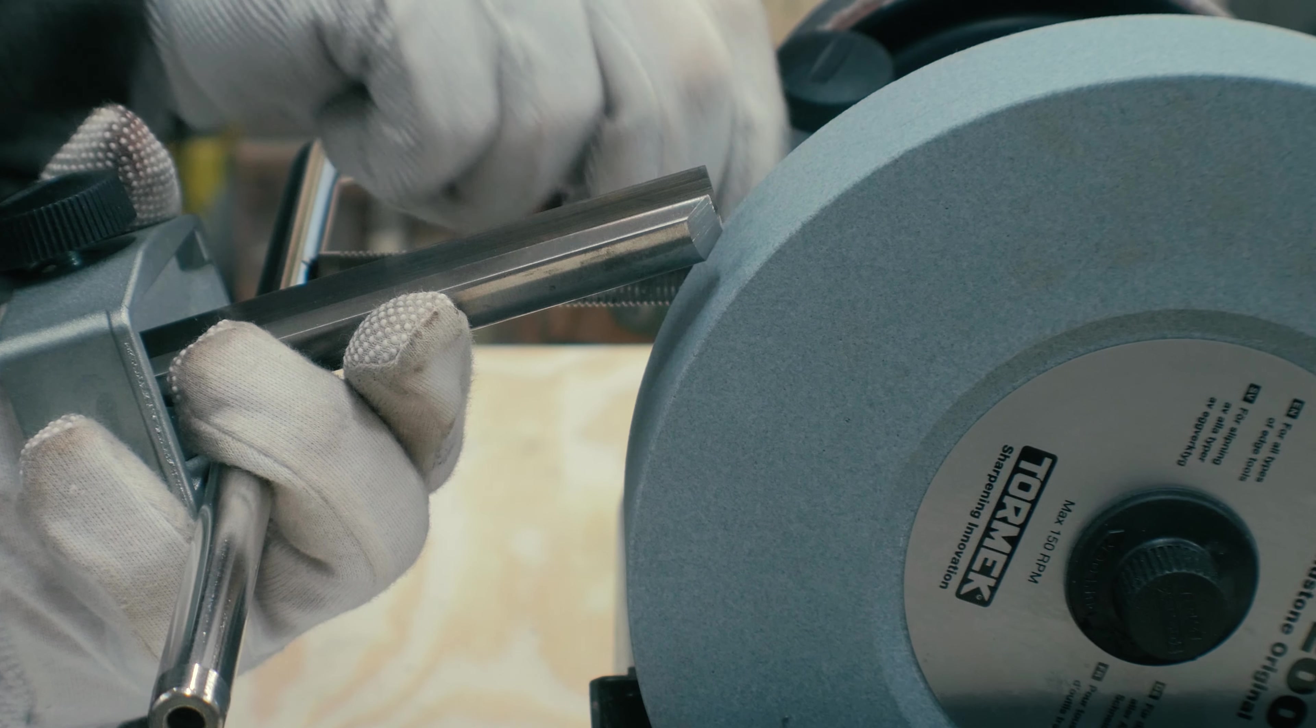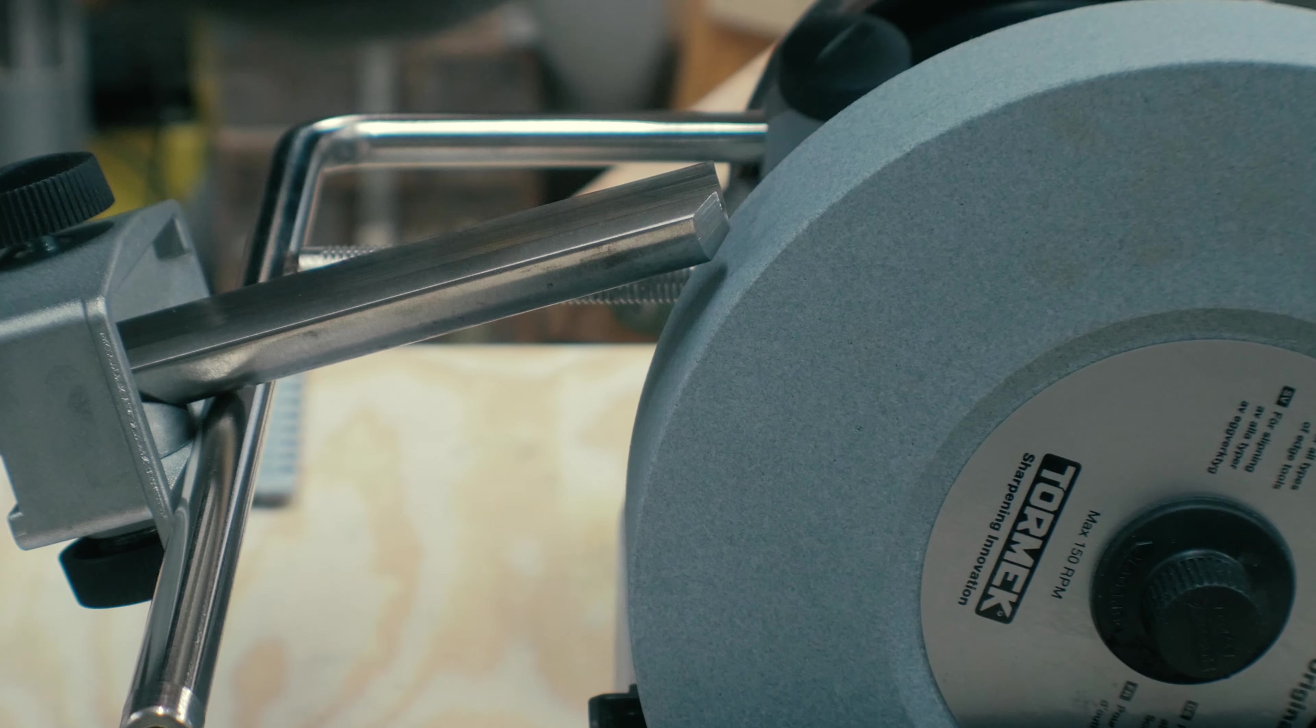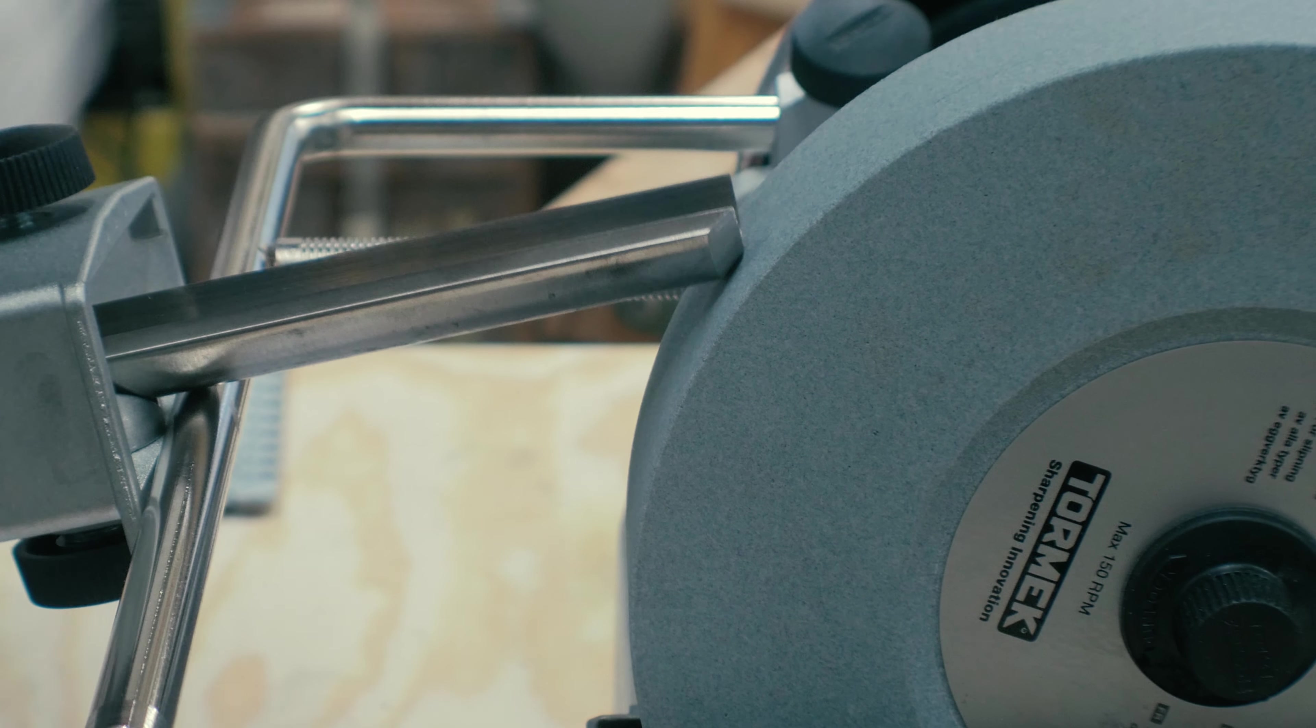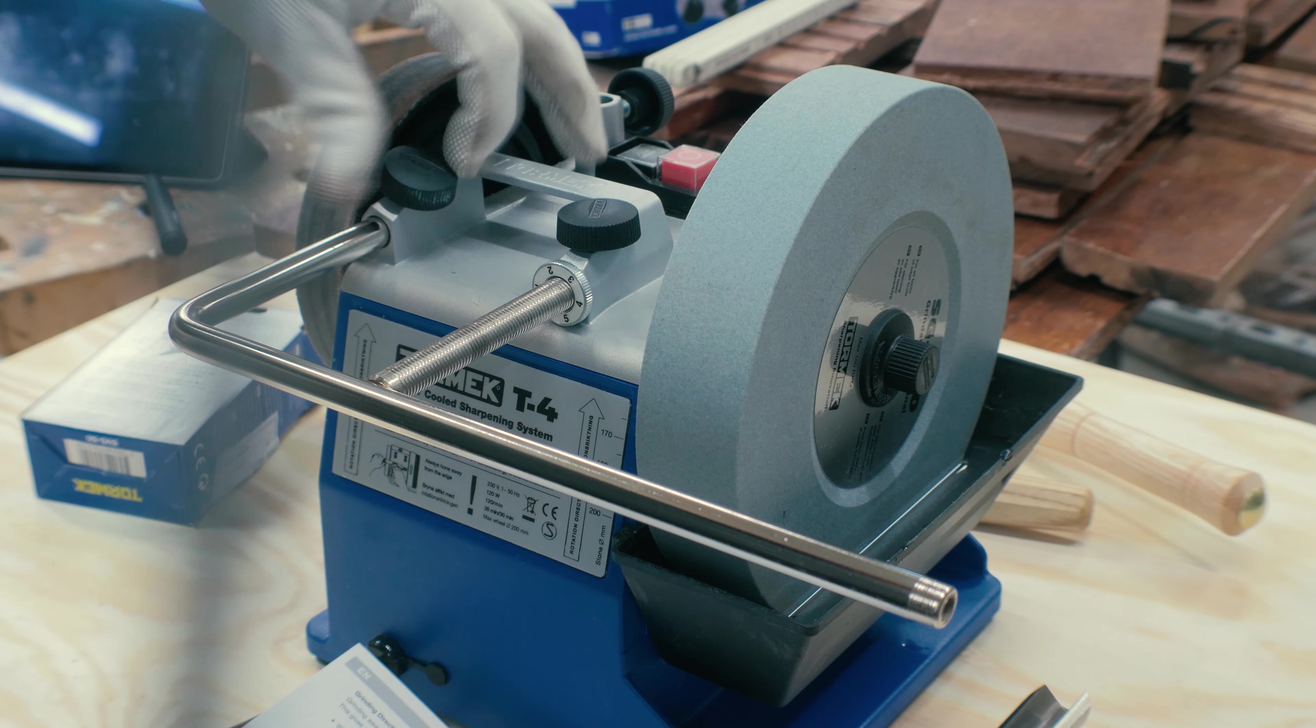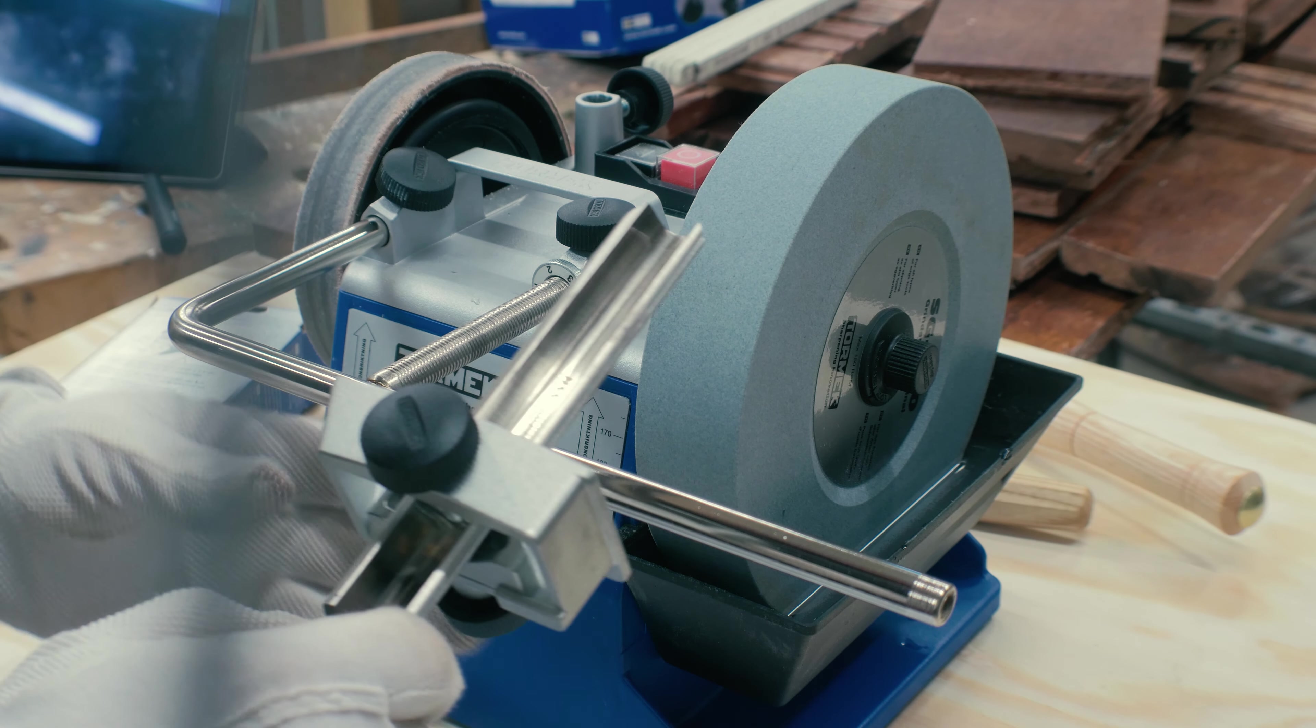That way I want the universal support to go a bit out. I'm using the micro adjustment screw to get a perfect angle. There I have the perfect angle. I'm tightening the universal support knobs. Just checking the angle once again.